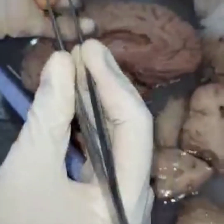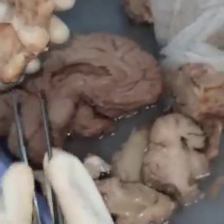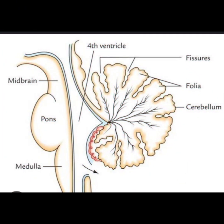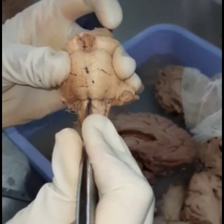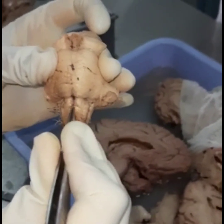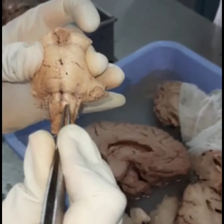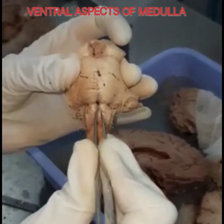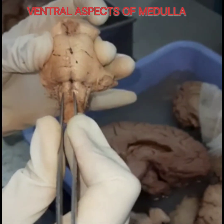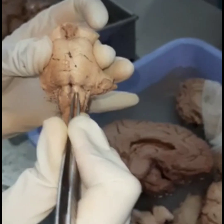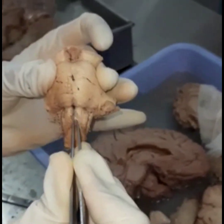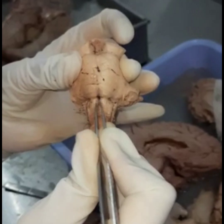What are the structures surrounding the fourth ventricle? There is the anterior median fissure. Lateral to that we have the pyramids. They are called pyramids because the pyramidal tracts — the corticospinal tracts and corticonuclear tracts — are present here, deep to these elevations.